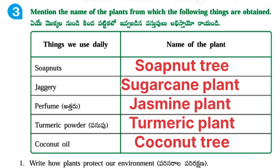Next, mention the name of the plant from which the following things are obtained. Things used daily and name of the plant: Soap nuts — from soap nut tree. Jaggery — from sugar cane plant. Perfume — from jasmine plant. Turmeric powder — from turmeric plant. Coconut oil — from coconut tree.